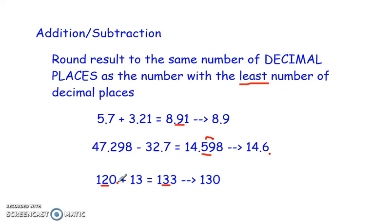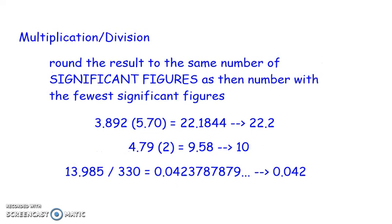If there was a decimal point written after that zero — again, you're not going to tend to deal with that too often in chemistry, but I'm just going to throw that in there so if you see it somewhere, you won't be confused. So when you're adding or subtracting, you round the result to the same number of decimal places as the number with the least number of decimal places. When you are multiplying or dividing, you round the result to the same number of significant figures as the number with the fewest significant figures.